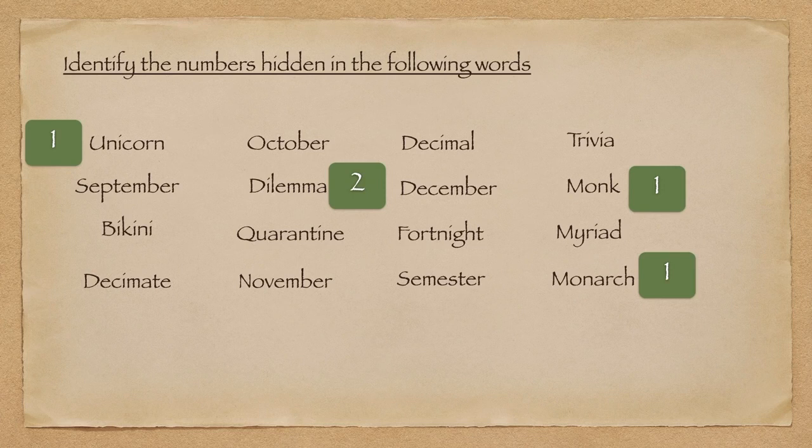Moving on to the number three — the prefix for three, very much like in Sanskrit or Hindi, is tri. Even in Hindi, words like Trivedi, Trikon, Trimurti, Trishul all have an aspect of the number three. The prefix in Hindi is very similar to the English prefix, which is tri.